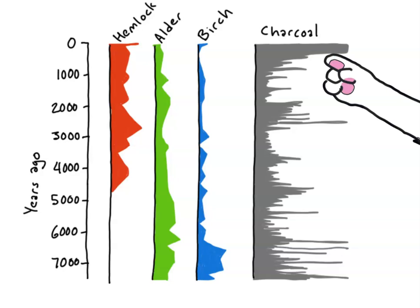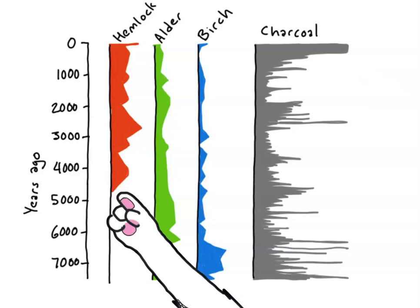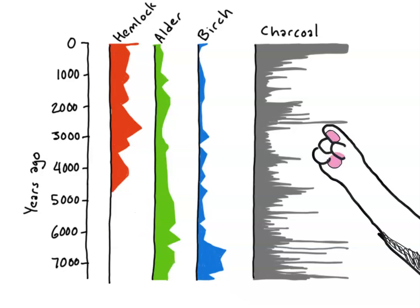On a longer time scale, we see a general decrease in the amount of pollen from alder and birch and an increase in hemlock, showing a shift in the composition of the forest. During this period, the total charcoal is generally going down, but with periodic high fire times. These changes could be the result of cultural or economic changes in indigenous societies that lived here, or changes in the climate of the area.